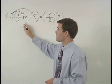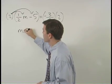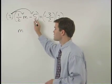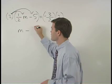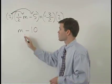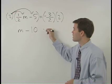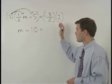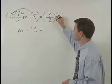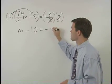2 times 1 half m is just m. And 2 times negative 5 is negative 10. So we have m minus 10 on the left side of the equation. On the right side, our 2's cancel and we're left with negative 3.